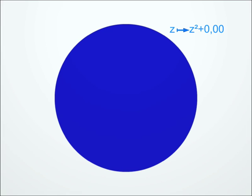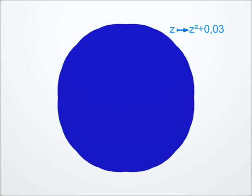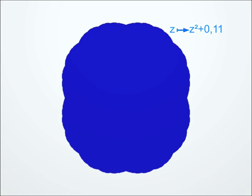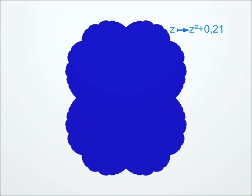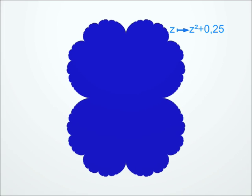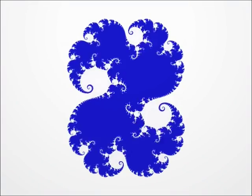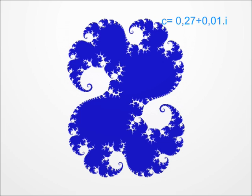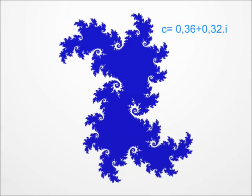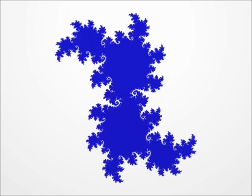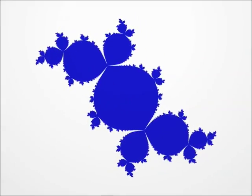But we can play the same game with other transformations, like those of the form Z squared plus C, where C is a complex number that we can choose at will. For each complex number C, we therefore have a Julia set whose shape changes when C changes. You can see a few examples here. Here is the one I called the rabbit.